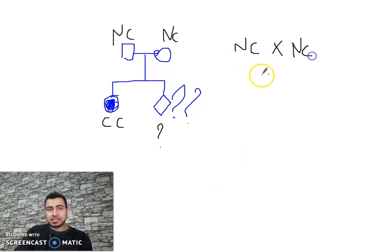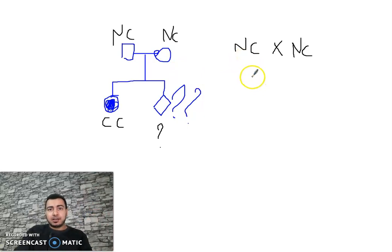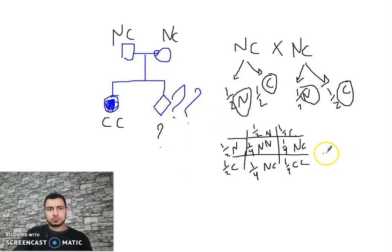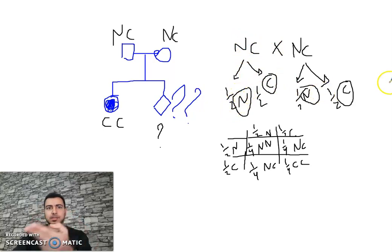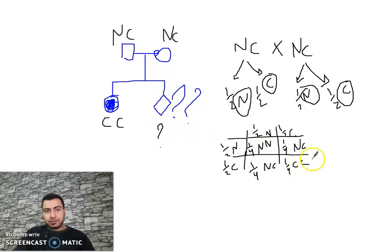By factorial analysis, each NC parent produces two gamete types — half N and half C. Using a cross table: 1/4 NN, 1/4 NC, 1/4 NC, and 1/4 CC. So the probability of the child being affected (CC) is 1/4.